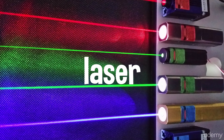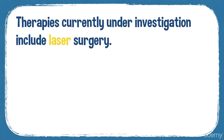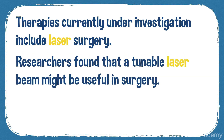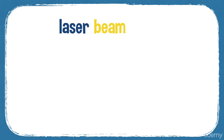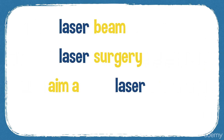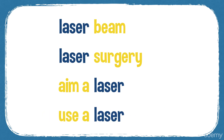The next word is 'laser.' A laser is a narrow beam of concentrated light produced by a special machine. Lasers have many uses — they can cut very hard materials, they can be used in surgery, and also in telecommunications. For example: 'Therapies currently under investigation include laser surgery.' 'Researchers found that a tunable laser beam might be useful in surgery.' 'The air force started to use laser-guided bombs.' You can have a laser beam, laser surgery — you aim a laser.